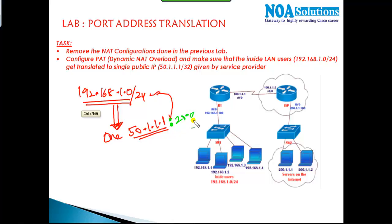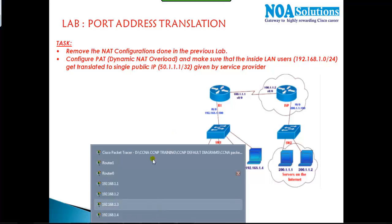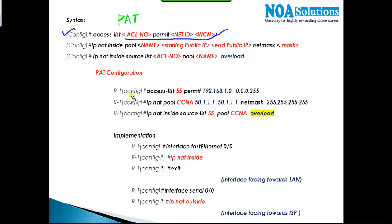We want all devices to get translated with only one registered public IP, which is why we also call this dynamic NAT overload. The syntax of PAT is exactly the same as dynamic NAT — we write an ACL to define the private network, specifying that any address starting with 192.168.1 represents private addresses.